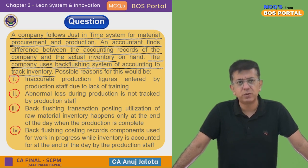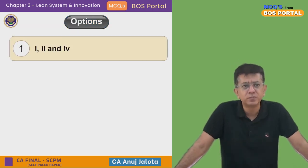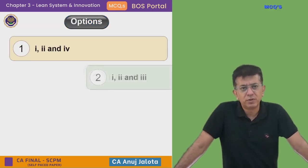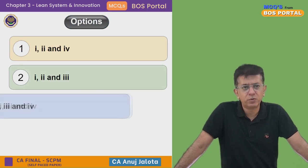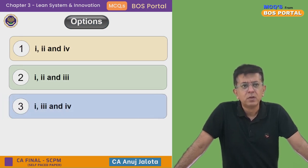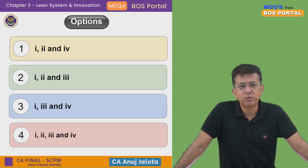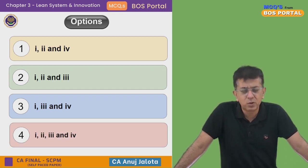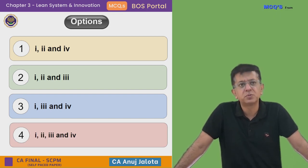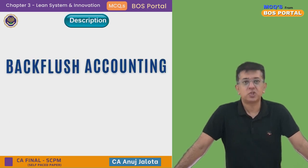The options are: first — one, two and four; second — one, two and three; third — one, three and four; last — one, two, three and four. Now before I come back to all these options, let me explain what back flush accounting means.